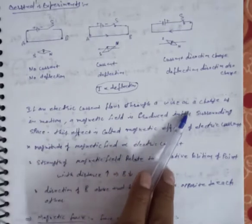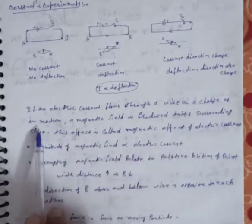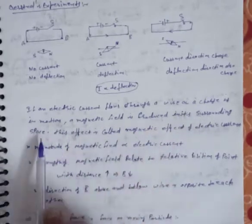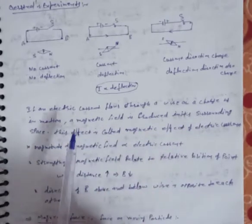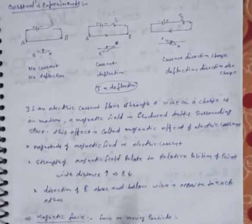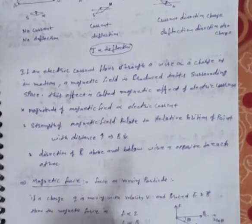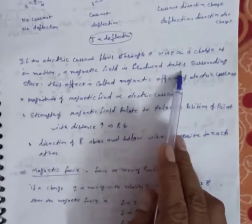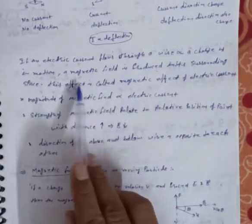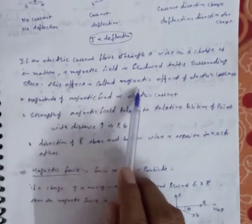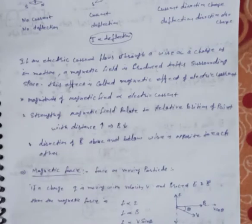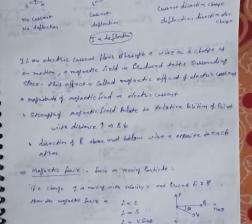If an electric current flows through a wire, charge is in motion and a magnetic field is produced in its surrounding space. If you have current-carrying conductors with flowing charge carriers, a magnetic field is produced in the surroundings. This effect is called the magnetic effect of current electricity — current ki wajah se magnetic effect generate hona.